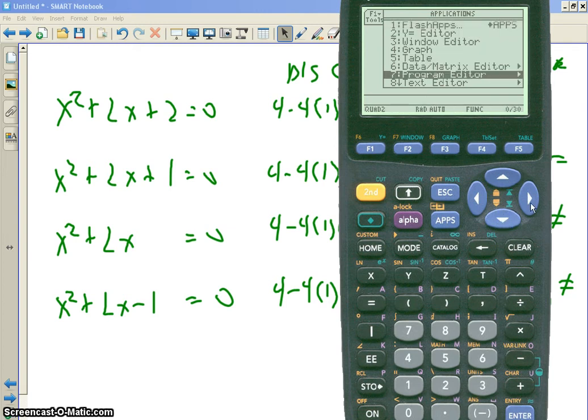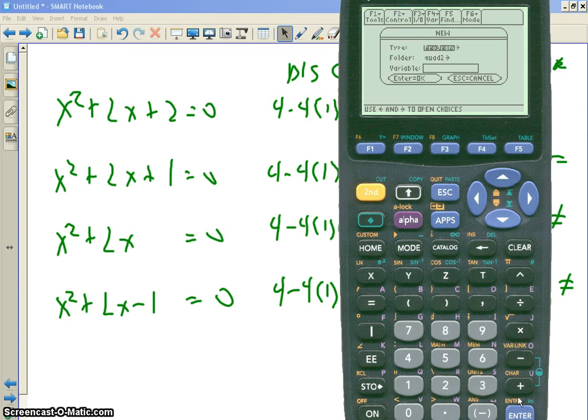Okay? All right. So go to apps. And let's go to program editor. And let's do new. And it's a program in this folder. I'm going to call it quad. So go down. I'm going to call the program quad again. Let's say quad. You can get more fancy if you want. Q-U-A-D.